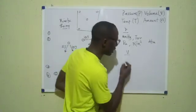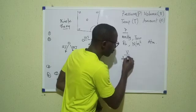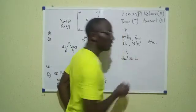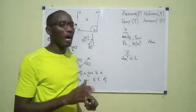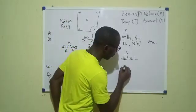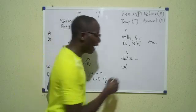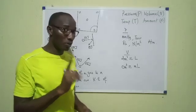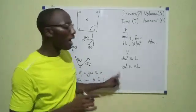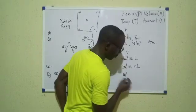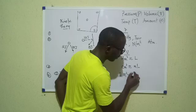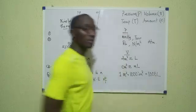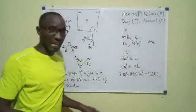Now, possible units for volume include dm³, cubic decimeter, which is equivalent to the liter. So, one liter and one dm³ are the same. Then, we also have cubic centimeter (cm³), which is equivalent to milliliters (mL). So, one milliliter is one cm³. And, then, there's another unit that is written as meter cube (m³). Now, one meter cube is one thousand dm³, which is also one thousand liters. So, meter cube is also a recognized unit for volume.